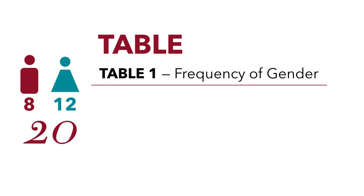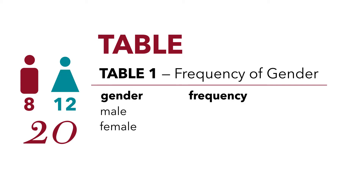We have our variable, Gender, and we have two categories for that variable — Male and Female. We're displaying the frequency, so one of our labels is Frequency. We also calculated Percentage, so we'll include that, and we'll include our total. The number of males was 8, the number of females was 12, and the total was 20.